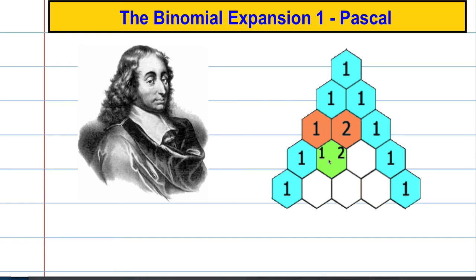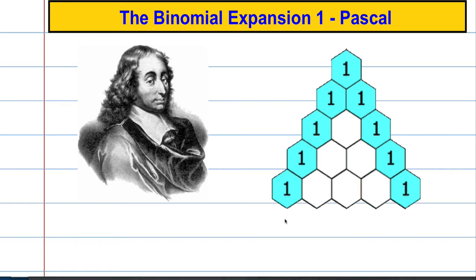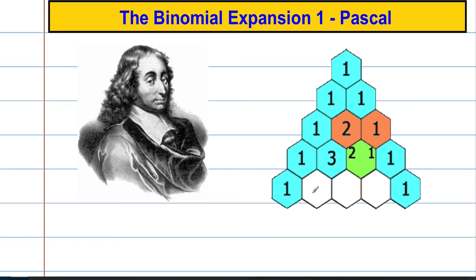So one and two gives us three, two and one gives us three, one and three gives us four, three and three gives us six, three and one gives us four, and so on. And it can continue on indefinitely, so we can get more values underneath.